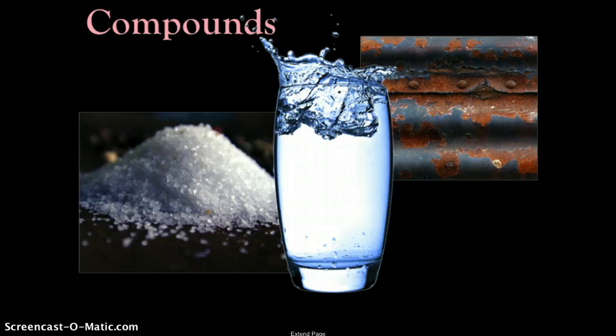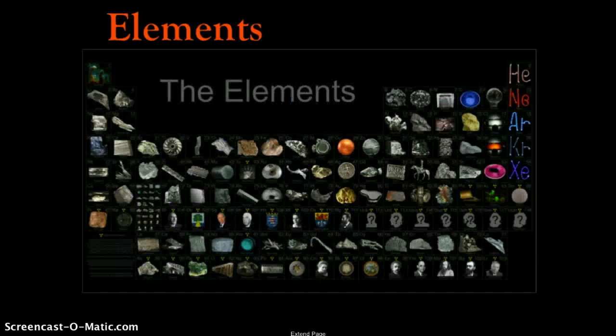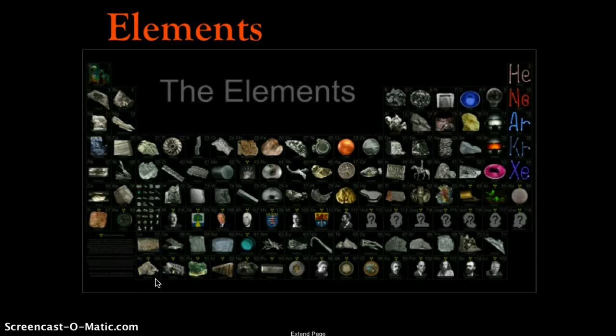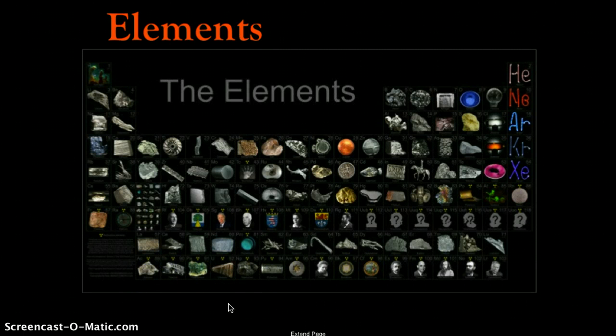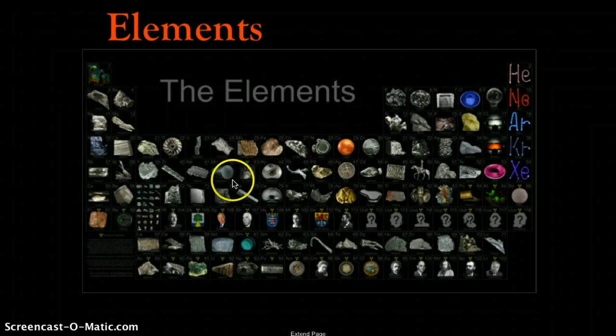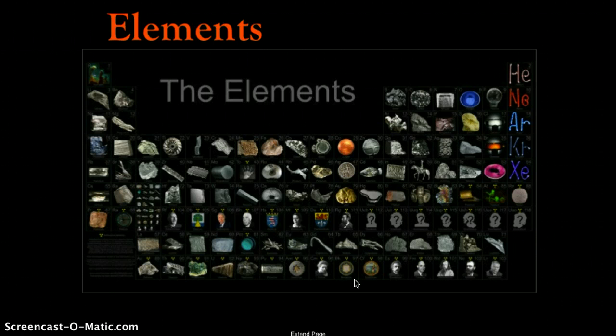Last but not least, we have the most pure of all substances, the simplest of all substances, and that is the elements. Elements are represented here on the periodic table - they cannot be broken down into simpler substances. So you're looking at things like aluminum, mercury, sodium, helium, argon, dysprosium, americium - so many different elements, there are over 100.